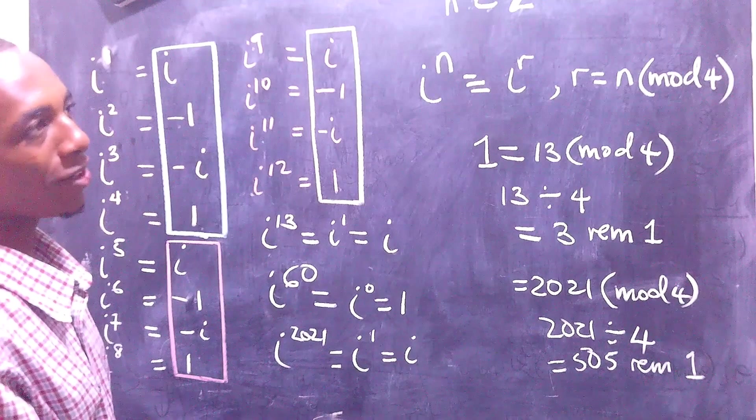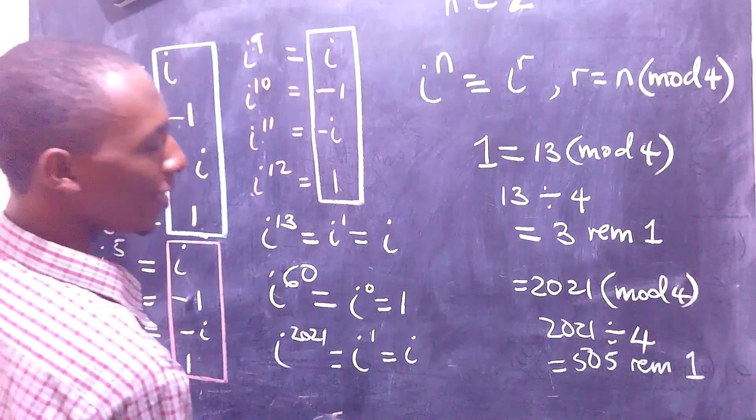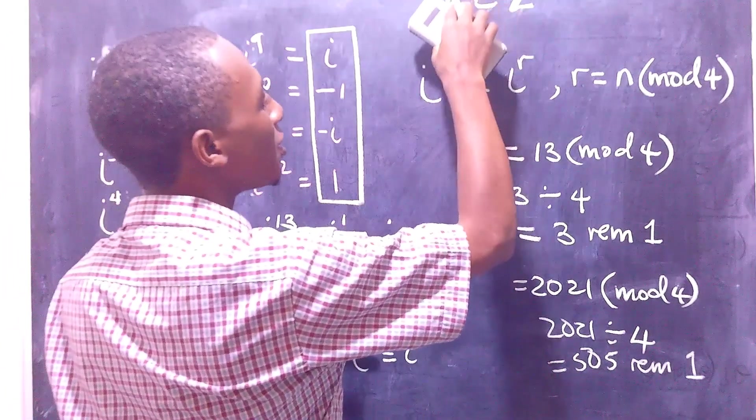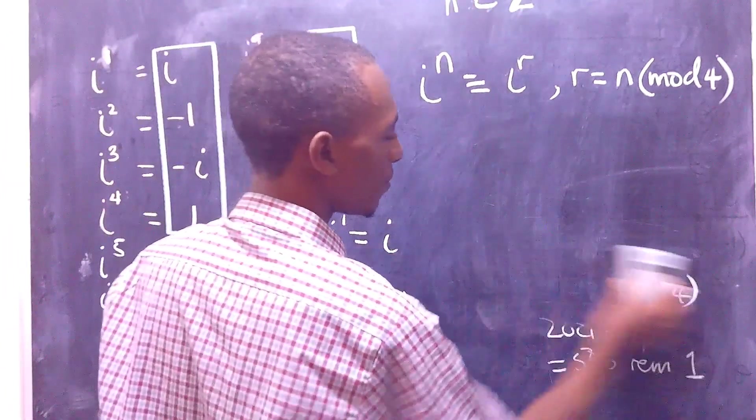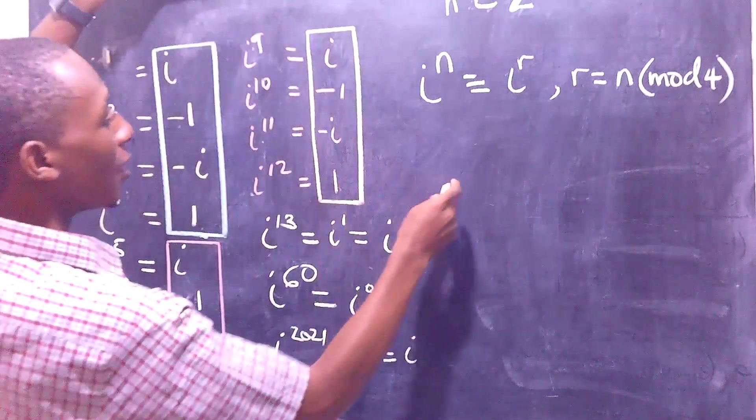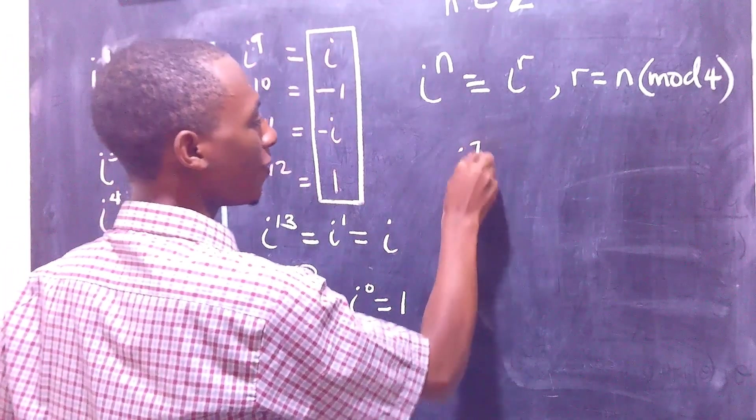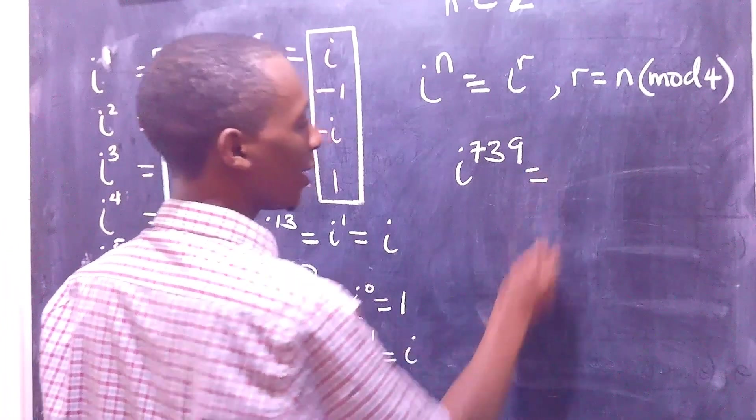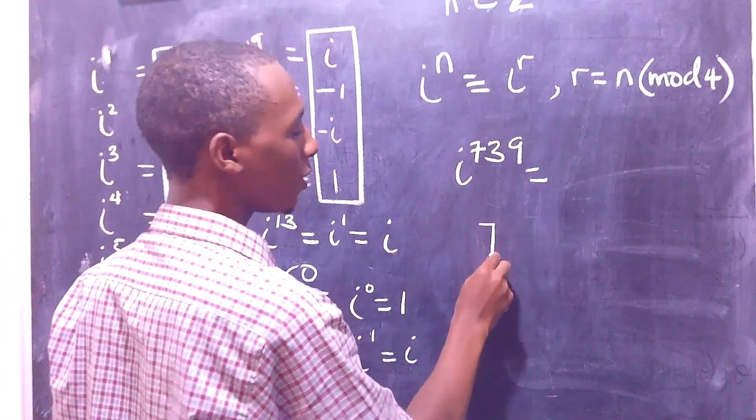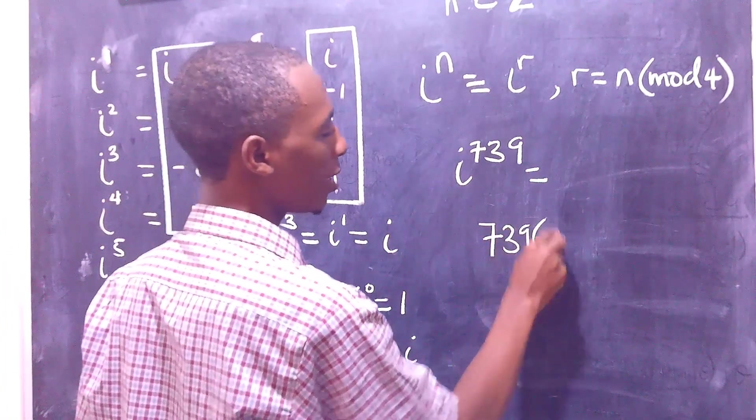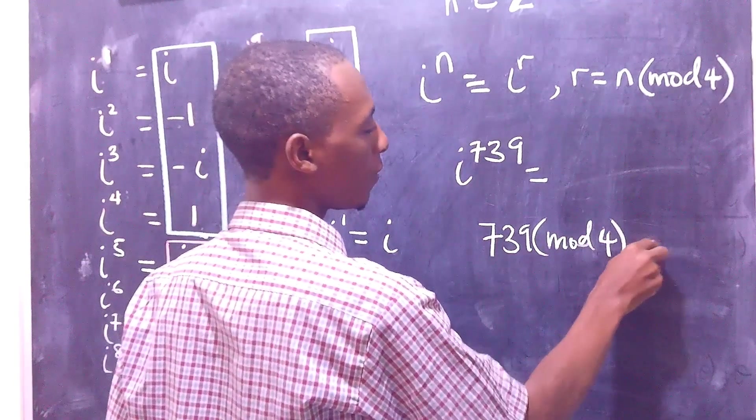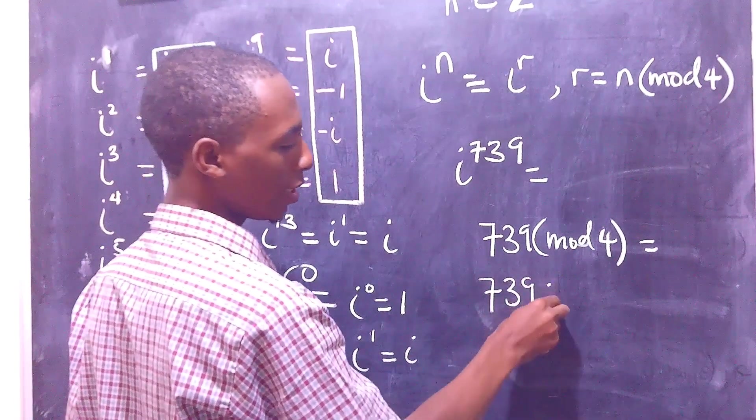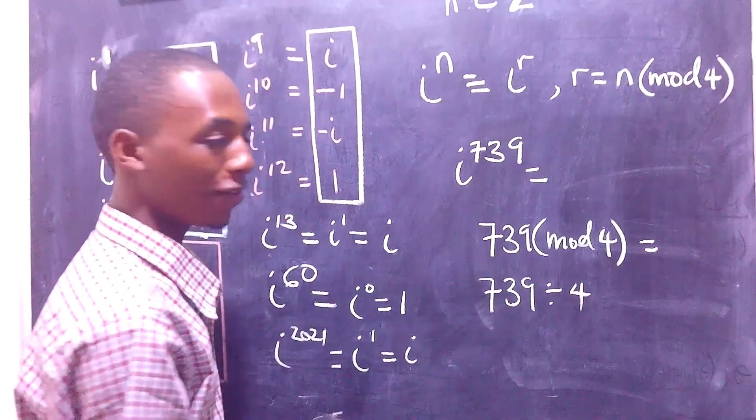And what was the other one, i to the power 739, we can also do that. Let me just clean this up. I to the power 739, so I'm going to write 739 in mod 4. I get 739, divide that by 4...